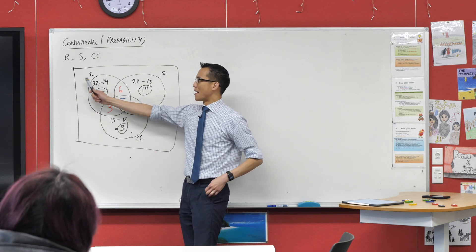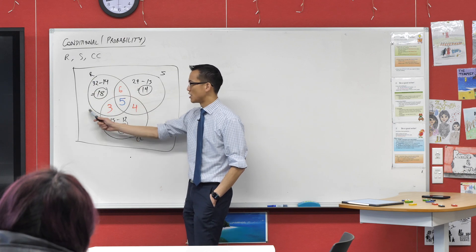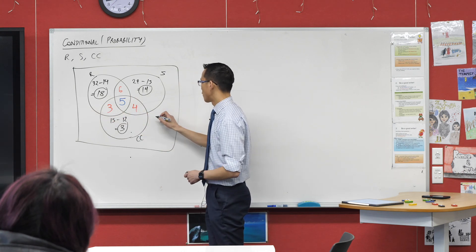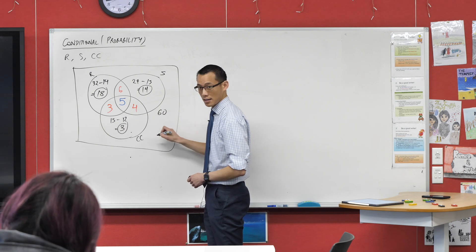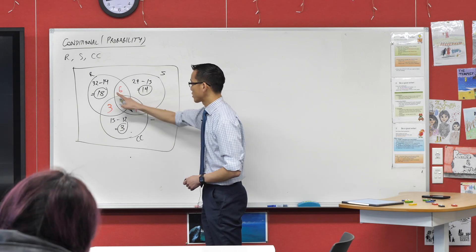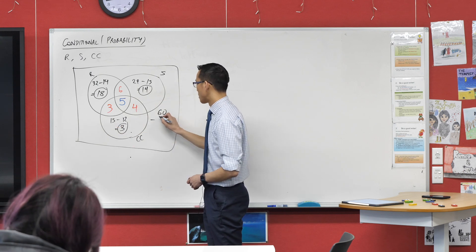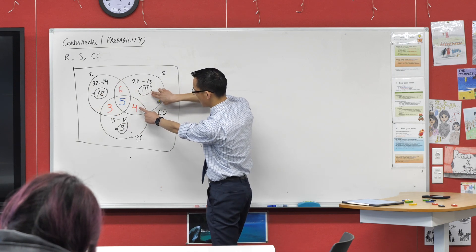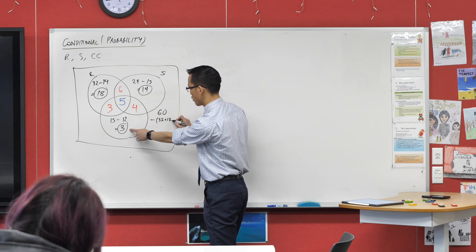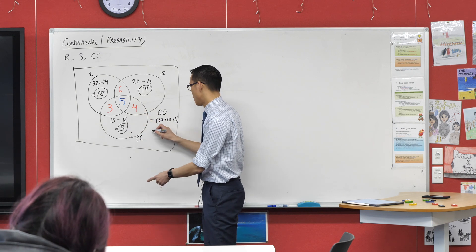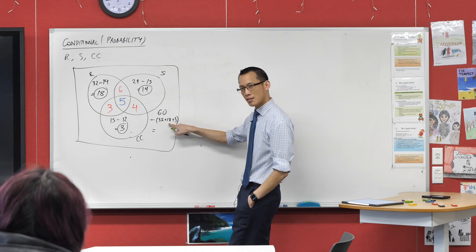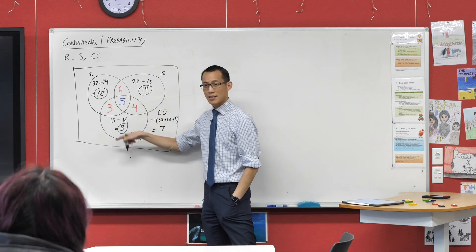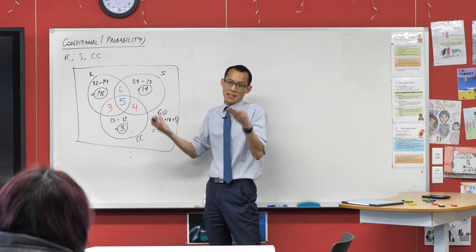We said rugby is 32, so I already know there are 32 in that circle. If all students is 60, I take away the 32 rugby players, then the 18 soccer-only players, then the 3 cross-country-only players — that looks like 53 to me. So 60 take away 53 is seven. There are seven students not accounted for; they didn't try out for anything.